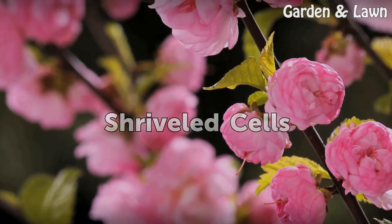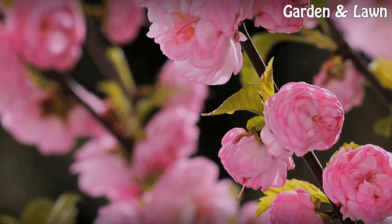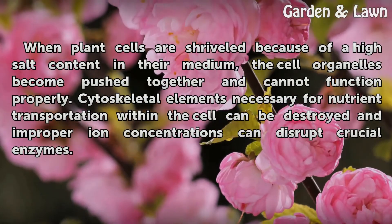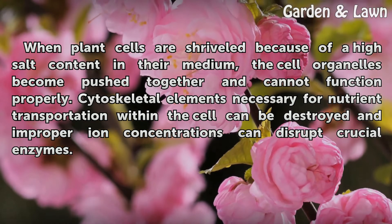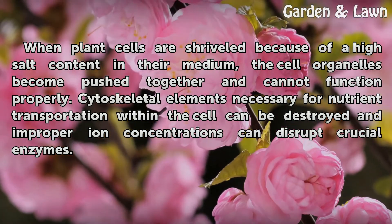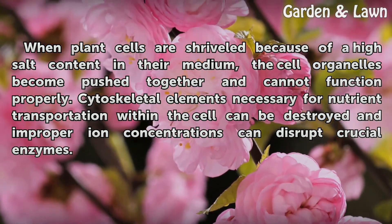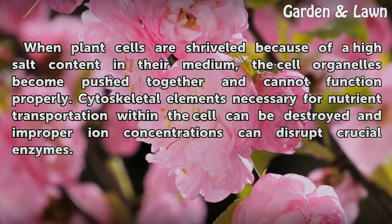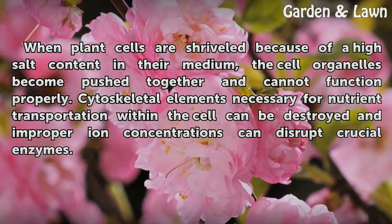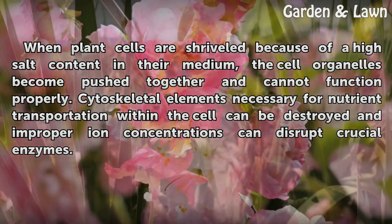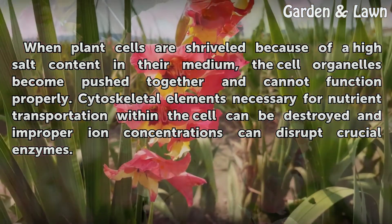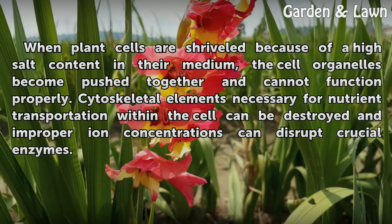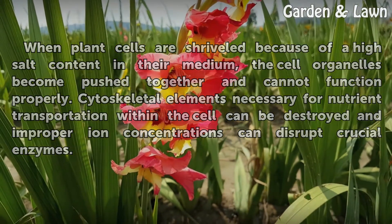Shriveled cells. When plant cells are shriveled because of a high salt content in their medium, the cell organelles become pushed together and cannot function properly. Cytoskeletal elements necessary for nutrient transportation within the cell can be destroyed, and improper ion concentrations can disrupt crucial enzymes.